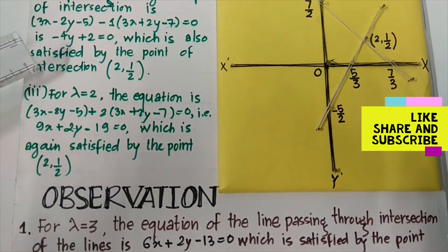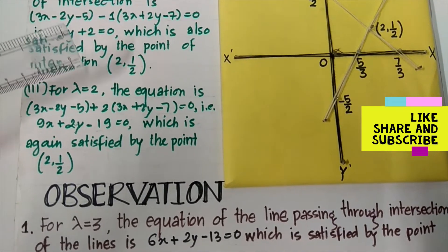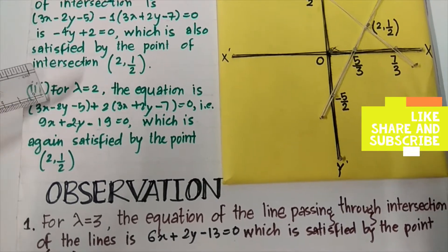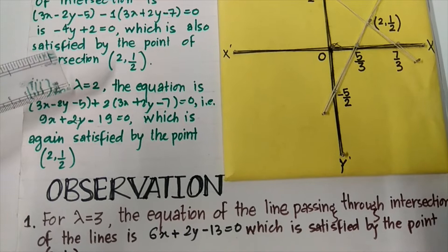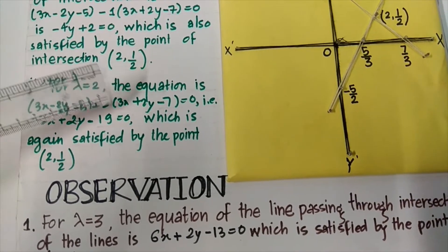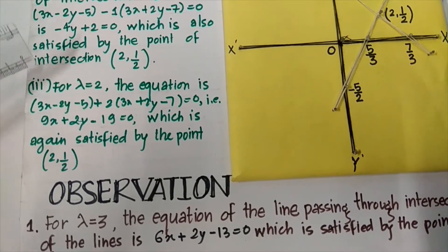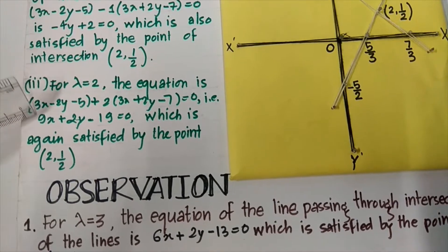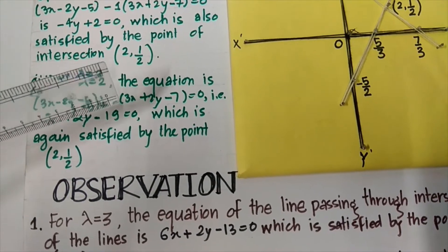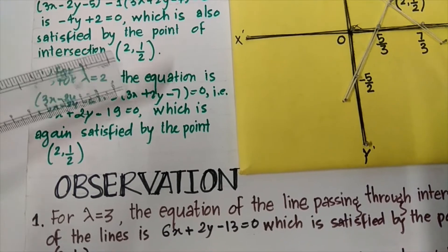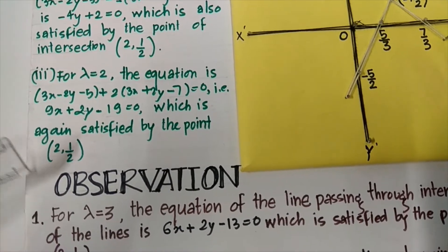By taking the value of lambda equals to 2, the equation is 3x minus 2y minus 5 plus 2 into 3x plus 2y minus 7 equals to 0. On solving, the equation 9x plus 2y minus 19 equals to 0 is obtained, which also satisfies the point of intersection (2, 1/2).